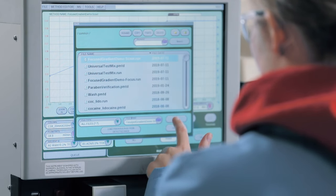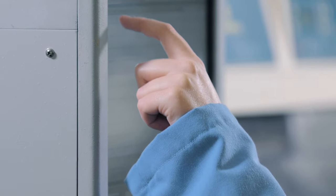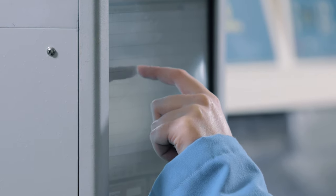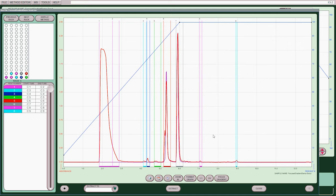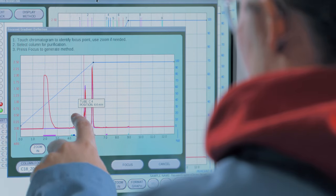When you use the scouting gradient, you can run a light load because you just want to see where the compound you want to purify elutes. Once the run is complete, Acuprep opens a window that shows the results of the scouting run. In that lower right-hand area of that window, press the button labeled Focus.